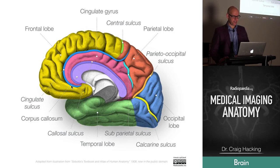On the medial aspect it's a little less complicated. We've got a lot of frontal lobe — it goes all the way back to the central sulcus. We have this cingulate sulcus that's a really good landmark to find, because where it kicks up into the marginal sulcus — the pars marginalis — that gives you a definition of where the central sulcus is going to be.